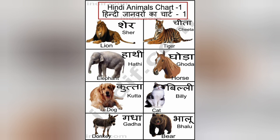Share — lion. Cheetah — tiger. Hathi — elephant. Ghoda — horse.